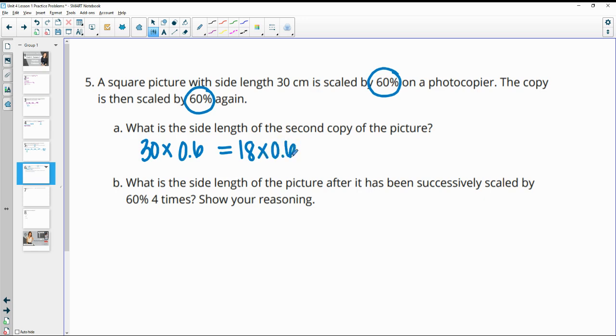And then we're going to scale that again by another 60%. So times by 0.6 and we get 10.8 centimeters is going to be the second copy of the picture.